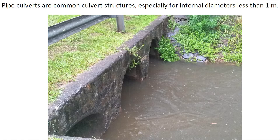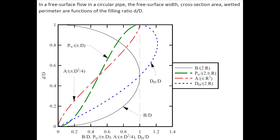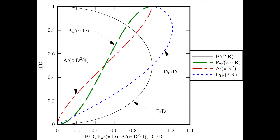Pipe culverts are a common culvert structure, especially for internal dimensions less than 1 meter. In free surface flow in a circular pipe, such as a pipe-barrel culvert, the free surface width, cross-section area, and wetted perimeter are functions of the filling ratio. This graph illustrates the variation with the filling ratio of the free surface width B, wetted perimeter PW, cross-section area A, and hydraulic diameter DH.